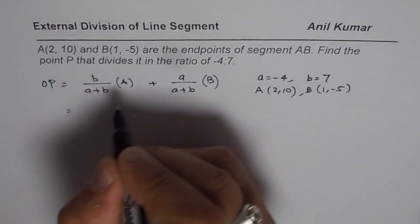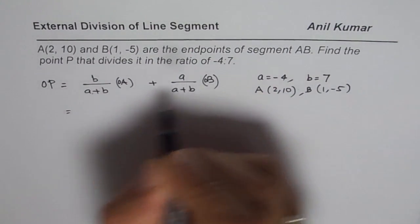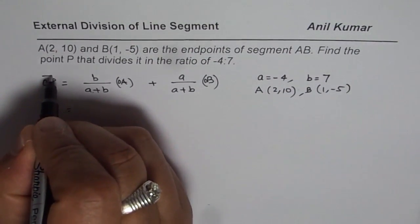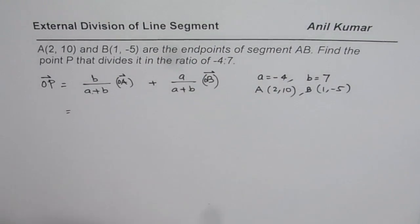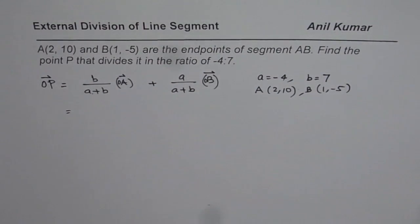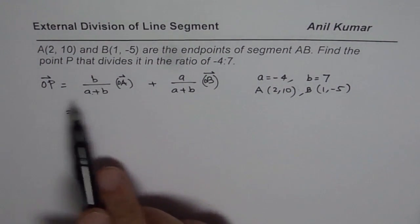So basically let me write OP, OA and OB. So that becomes the vector notation. Those of you who want to use this for coordinate geometry, you can just use point P as I wrote earlier.